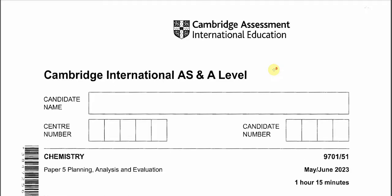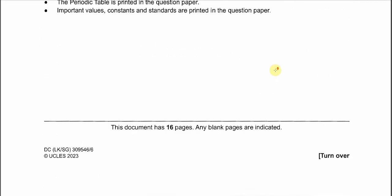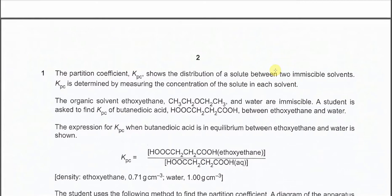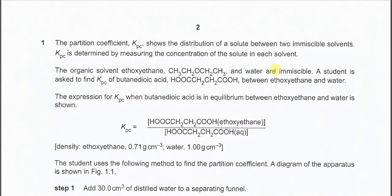May June 2023, paper 5 variant 1, question 1. This question is about the partition coefficient. The solvents used are ethoxyethane and water. These two solvents are immiscible, which is why they form a partition layer. The solute used is butanedioic acid, which distributes between the two organic solvents, giving each layer a different concentration of butanedioic acid. Once we know the concentration in each layer, we can calculate the KPC.